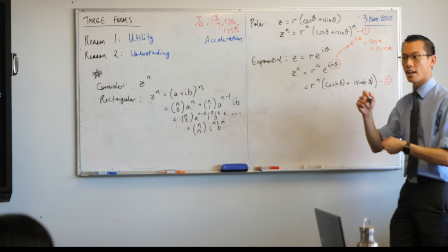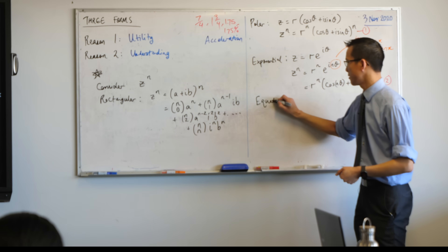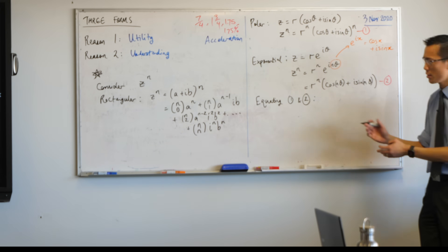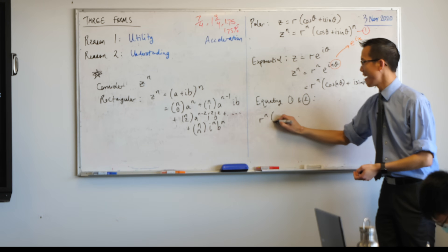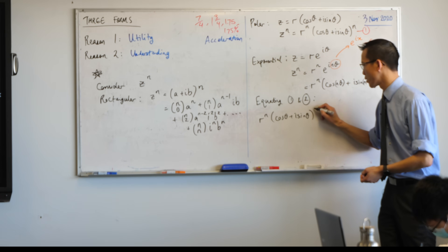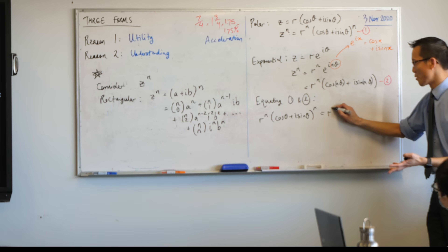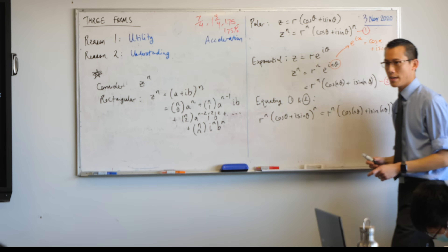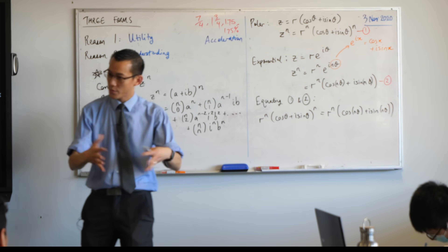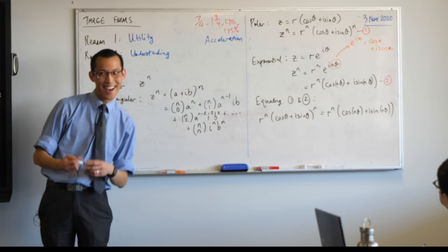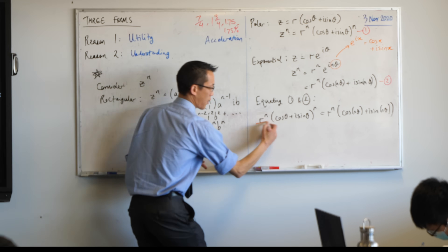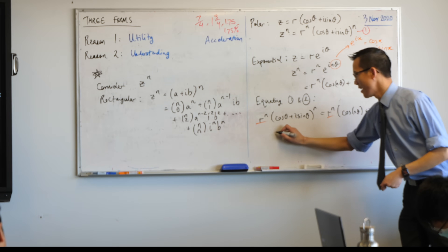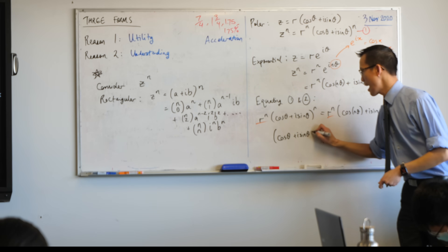If I call this equation one and this one equation two, it's just like simultaneous equations — I can equate them and get an important result. If I'm equating 1 and 2 because they're both equal to z to the n, you've got r to the n on both sides. It looks like there's a big common factor on both sides: r to the power of n. I divide through by that on both sides, and that leaves a really important result.